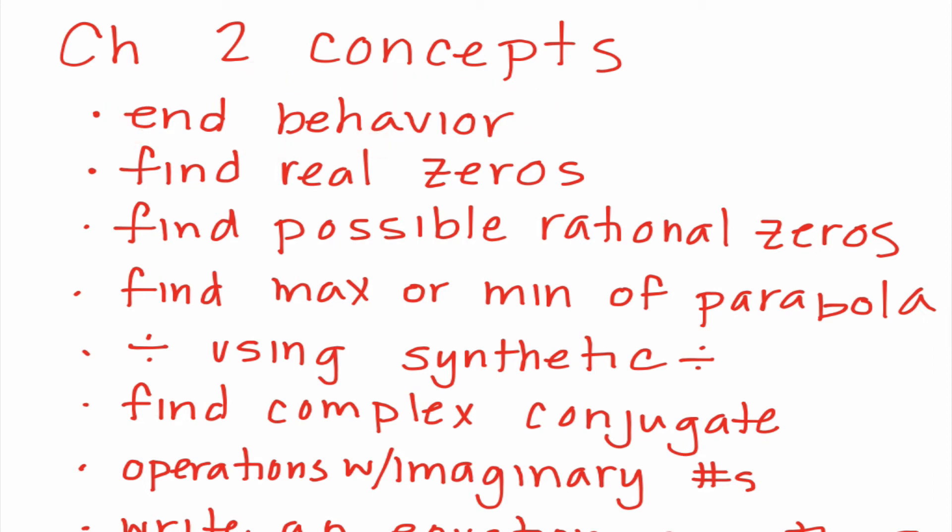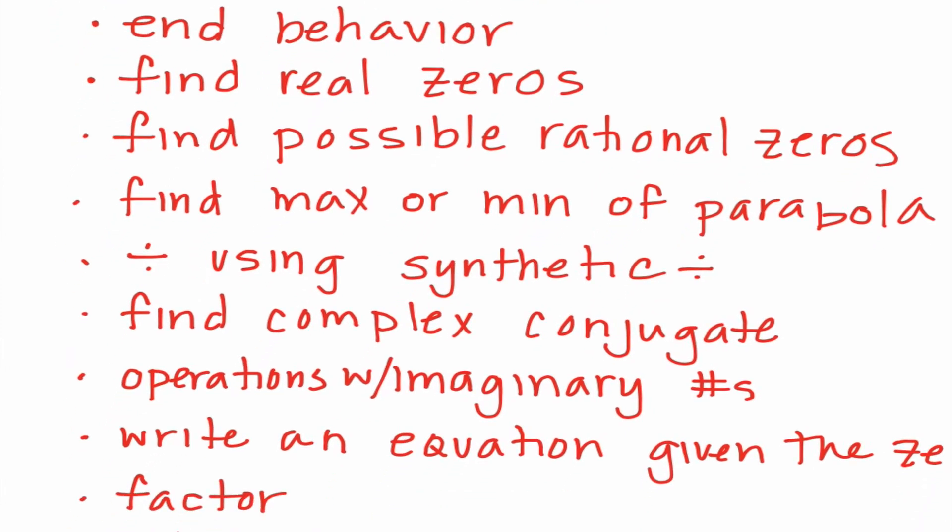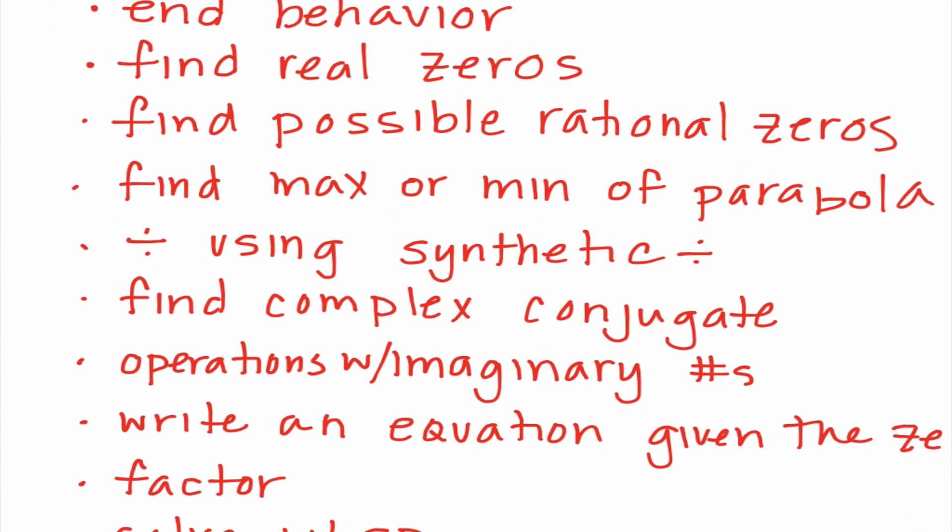Chapter two, end behavior. That is figuring out what's happening to the left and right as x approaches infinity. We need to know how to find real zeros. If we're using our graphing calculator, which we are on this portion, we can use our graphing calculator to do that. Use your graphing calculator to help you as much as you can. We need to know how to find possible rational zeros. Just a reminder, the way that we do that, it is factors of the constant divided by the factors of the leading coefficient. We need to know how to find the max or min of a parabola, and we could do that either graphically or algebraically. We need to know how to divide using synthetic division.